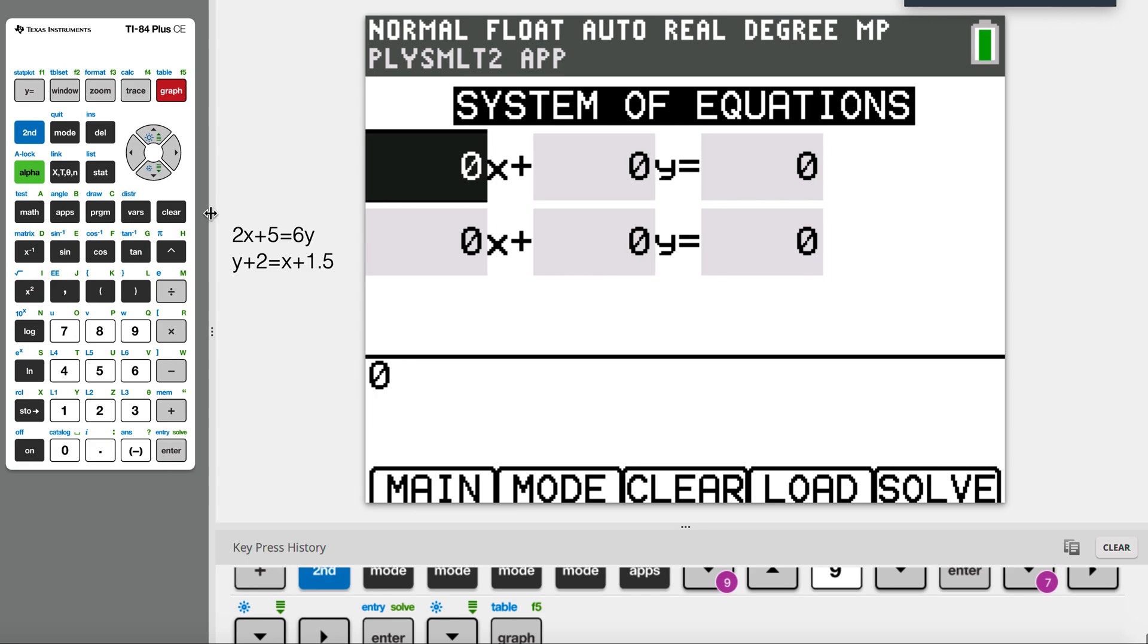Okay, so now we have to input our method. If you watched my last video, you'll know that in the matrix method we have to turn the equation into the same order. For instance, 2x plus 5 equals 6y, and the next equation must also start with the coefficient of x, a number, and y.